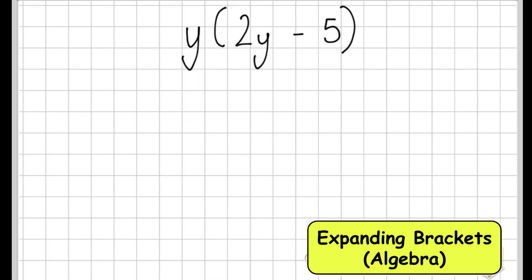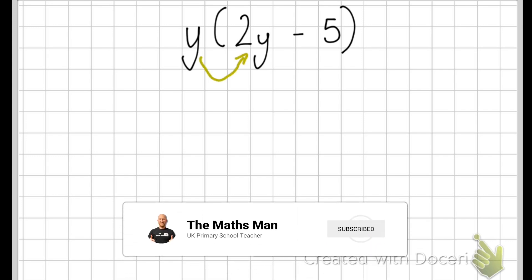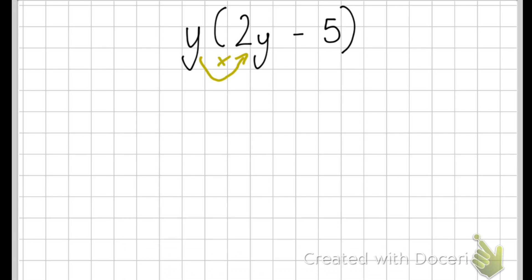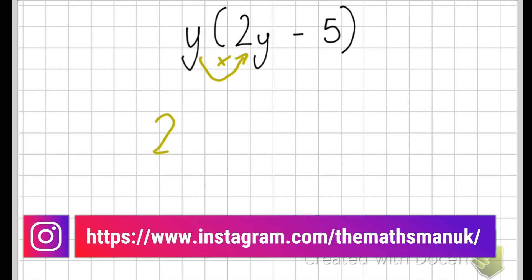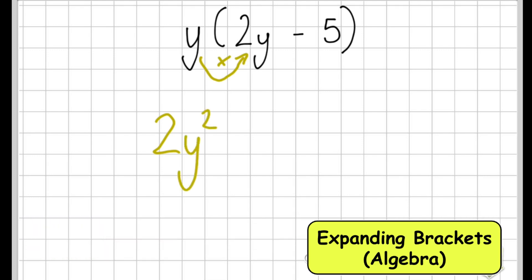Second question. So we have y and then we have brackets 2y take away 5. So again I'm going to multiply the number outside of the brackets which is y multiplied by 2y. So that will give me 2y² because when you multiply two letters together it makes it squared.